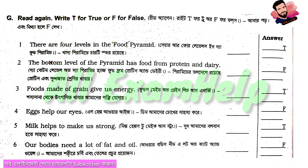The bottom levels of the pyramid have food from protein and dairy. You can see the pyramid level is lower than protein. It appears lower than expected.